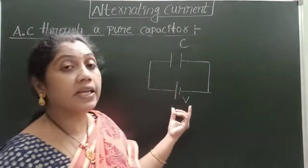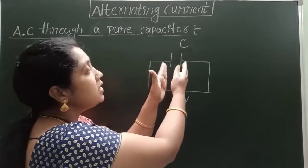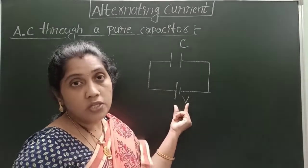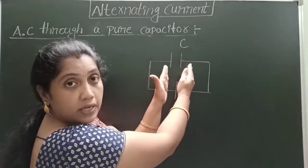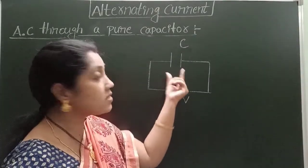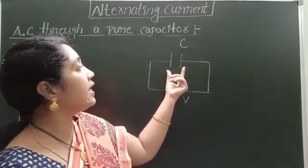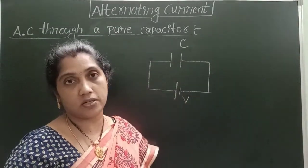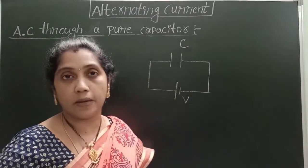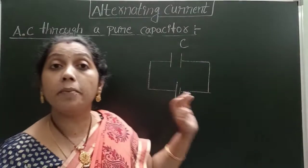When a capacitor is connected in a DC circuit, it charges up to the value of the potential provided by the battery. The potential difference between the plates equals the potential difference provided by the external source. Once fully charged, it does not allow any electrons to pass through the conducting plates — it is saturated and behaves like a temporary storage device. Even when the external source is removed, the charge remains constant.